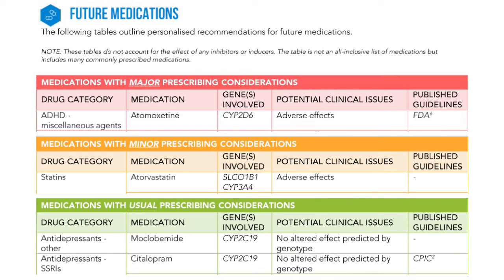For medications with usual prescribing considerations, no altered effect predicted by genotype does not mean you won't experience side effects from the medication. The pharmacogenomics test tells you how your body handles medications depending on your genetic makeup — will it clear the medication out too quickly and then the medication won't work, or will it clear the medication out too slowly and the medication will build up and cause adverse effects? If there is the right amount of medication in your body you can still get side effects from it, just because of the way some medications work.